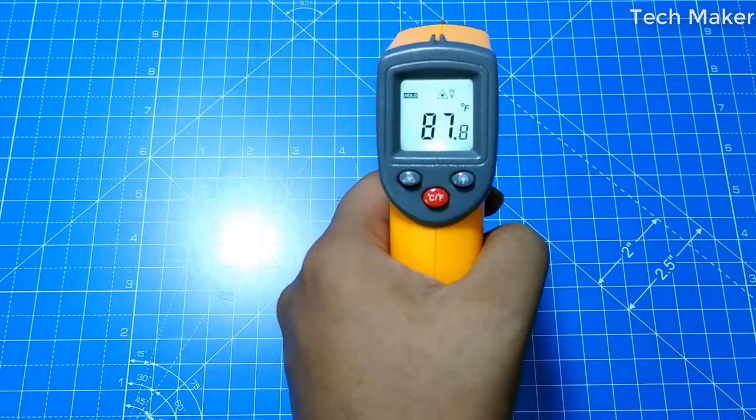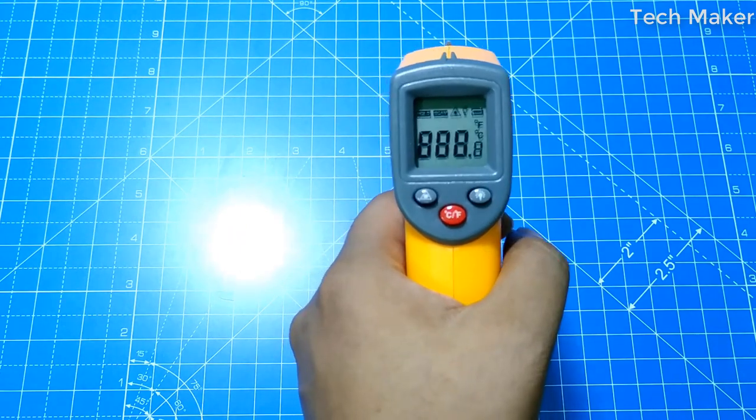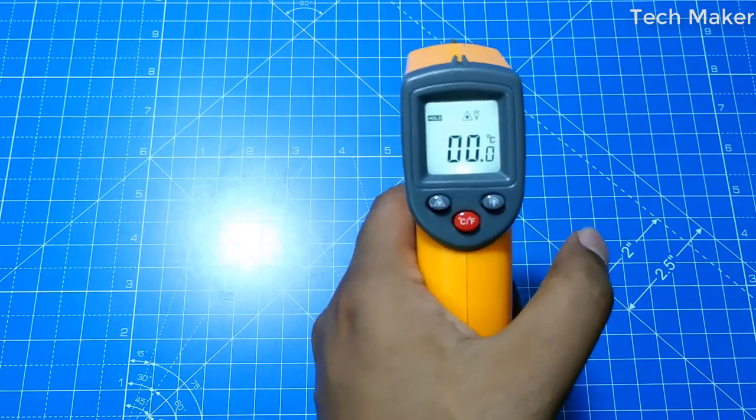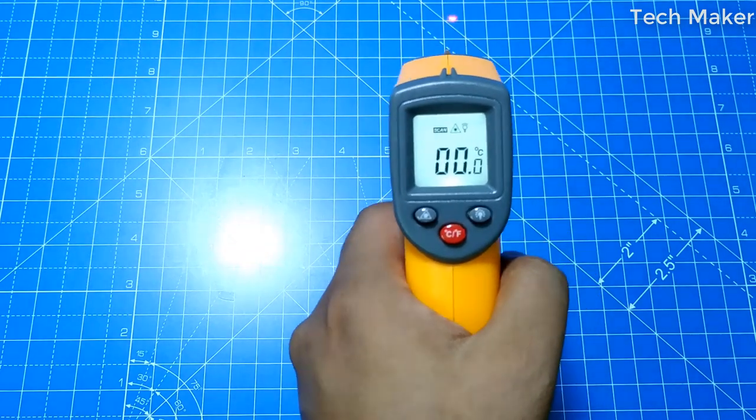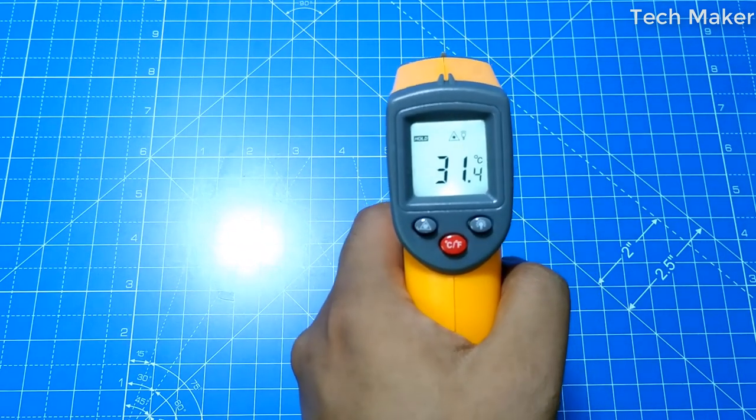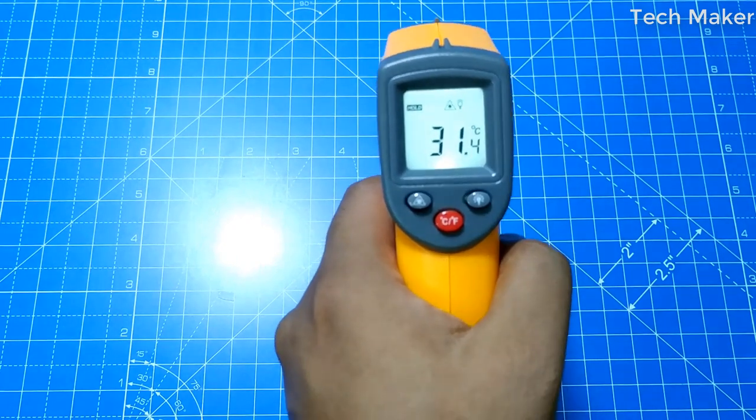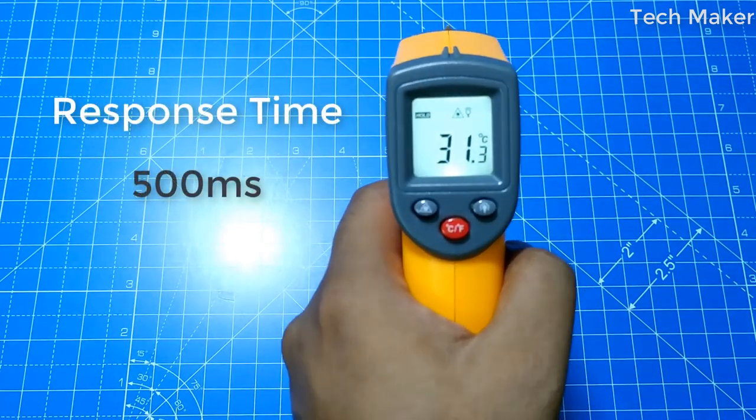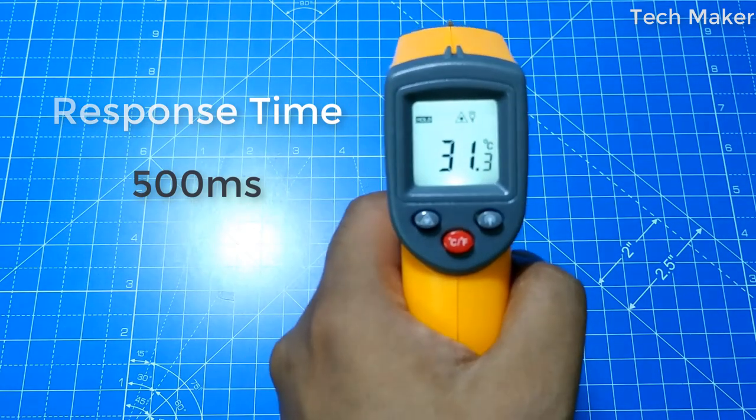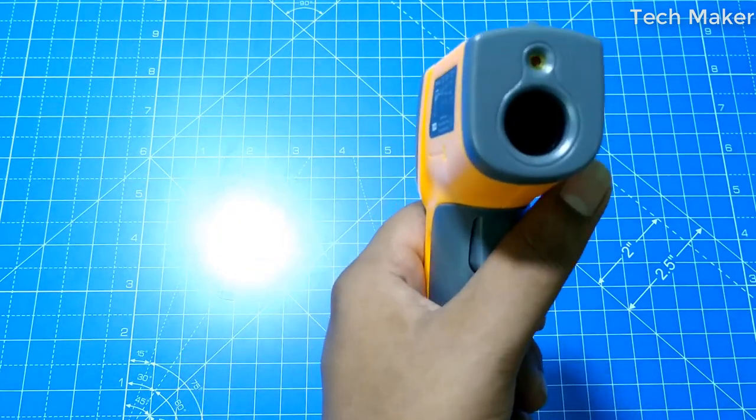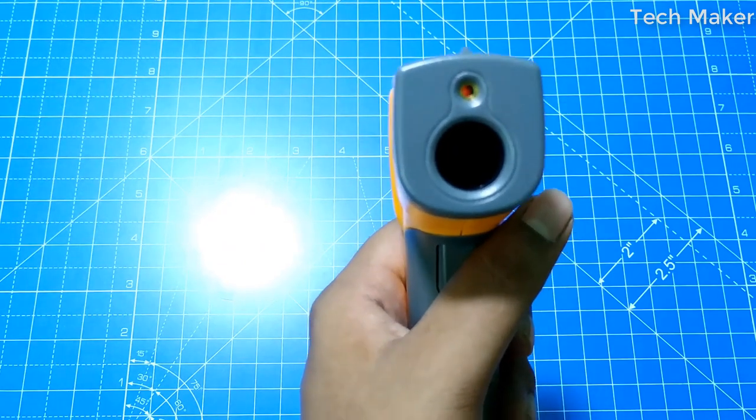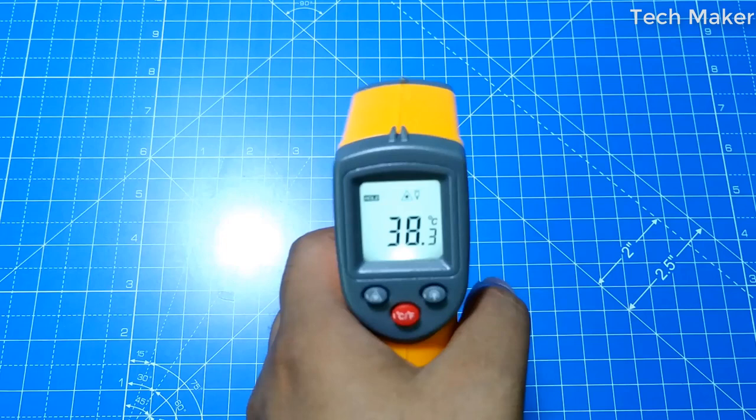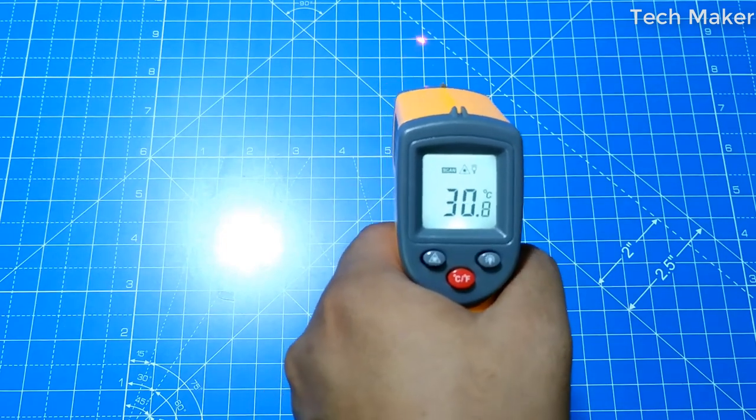And it has a faster response time so that it will get the data when you click on the trigger. And this response time as given in the specifications is 500 milliseconds. And it has a spectral response of 8 to 14 micrometers, and a distance to spot size of 12 to 1.